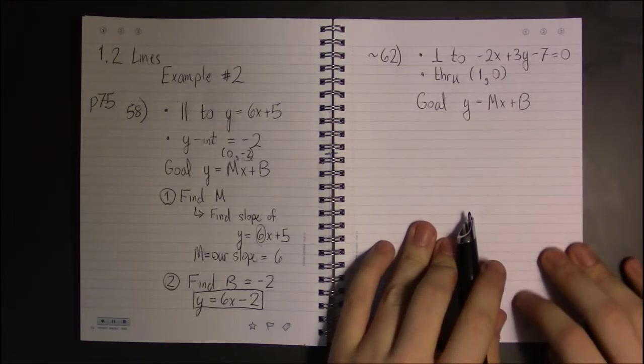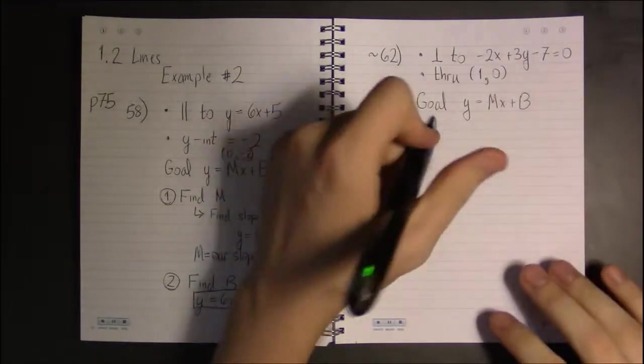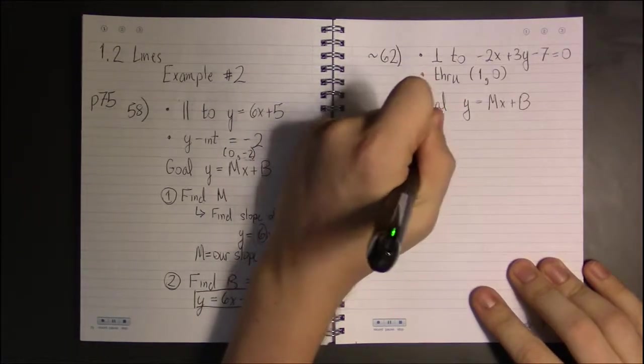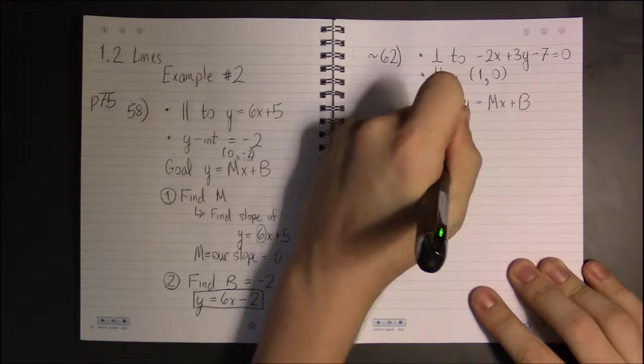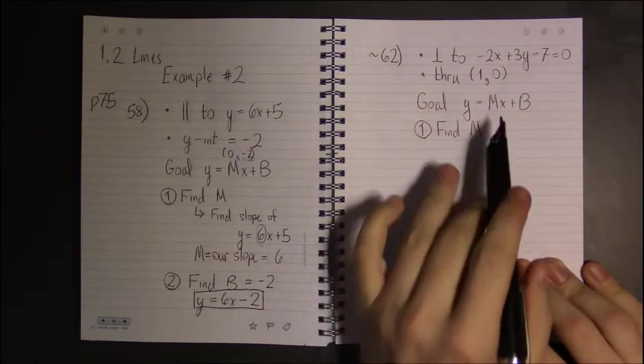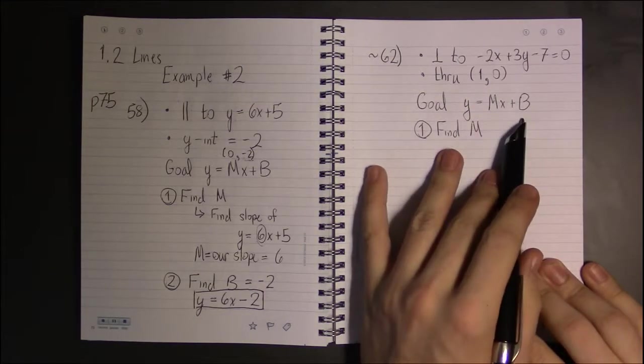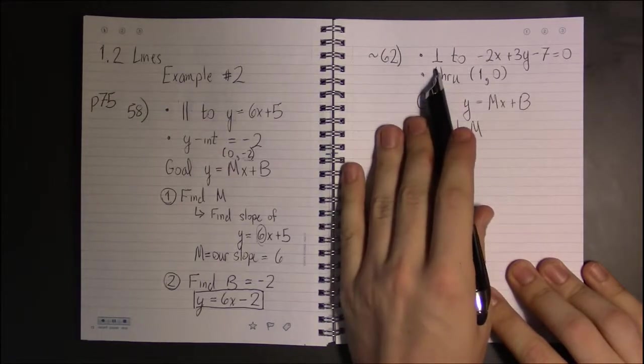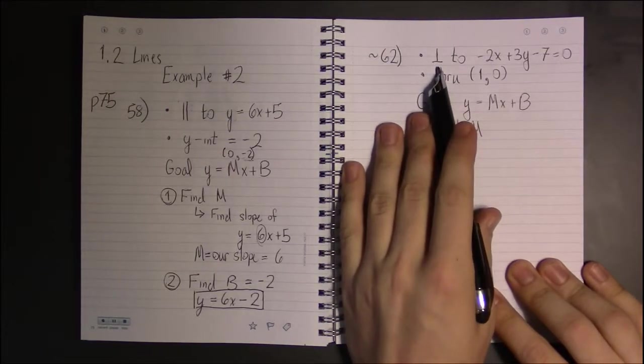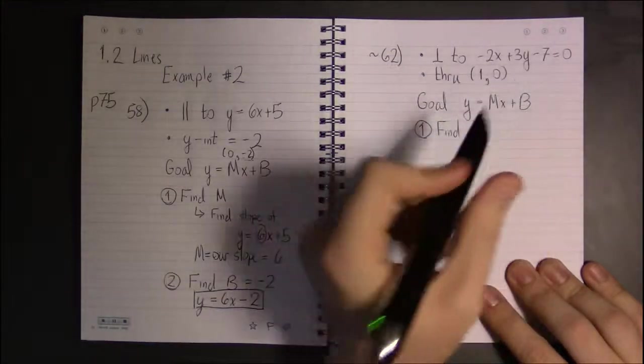So our answer, as usual, should be a line y equals mx plus b. So let's start it off, as we usually do, by finding the slope, by finding m. We only have one point, so can't do change in y divided by change in x. We've got to use the fact that we know our line is perpendicular to this line.